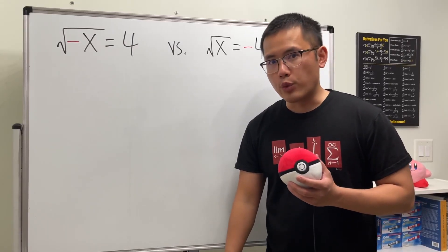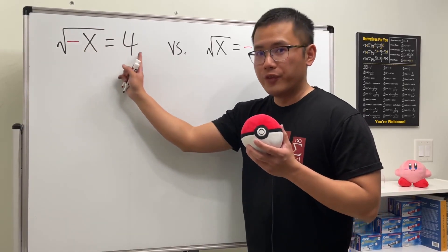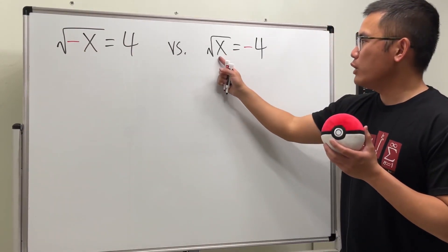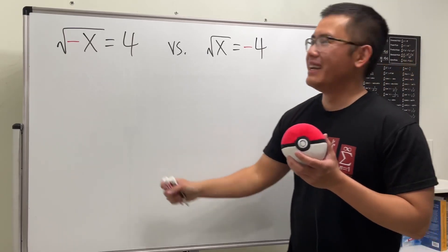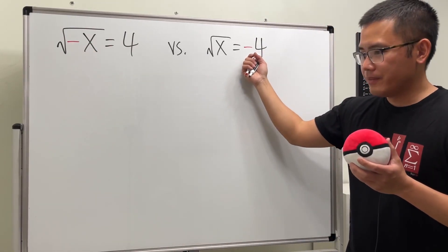I have two very interesting square root equations for you guys. The first one is square root of negative x is equal to 4, and the second one is square root of x is equal to negative 4. Yes, I put a negative inside here and we have the negative on outside here.